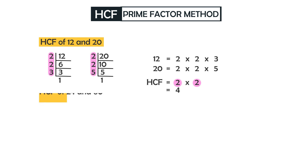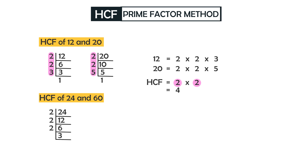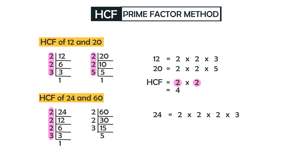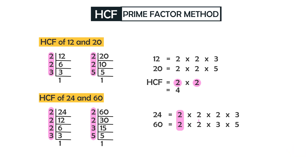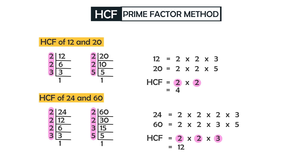Now let's find the HCF of 24 and 60 using the prime factor method. 24 = 2 × 2 × 2 × 3, and 60 = 2 × 2 × 3 × 5. The common prime factors are: a pair of 2, another pair of 2, and a pair of 3. So 2 × 2 × 3 = 12. The highest common factor of 24 and 60 is 12.